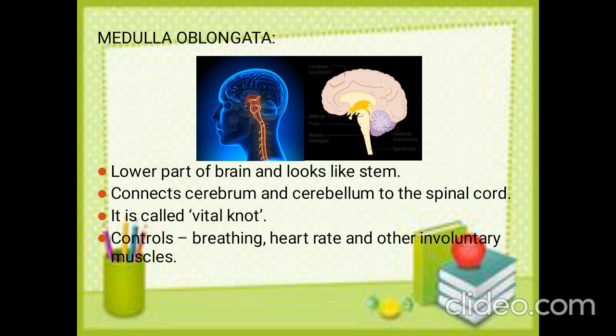Coming to medulla oblongata — it is like a stem and it is at the lower part of the brain. See in the picture how the medulla oblongata looks. It connects the cerebrum and cerebellum to the spinal cord. It is termed as the vital knot since it connects the spinal cord with the cerebrum and cerebellum.